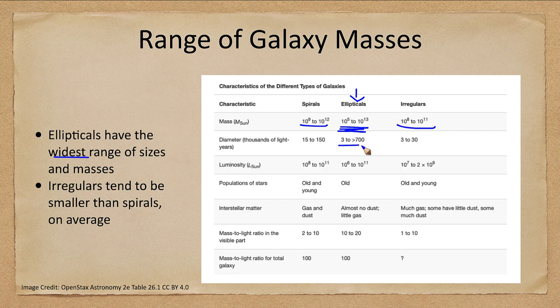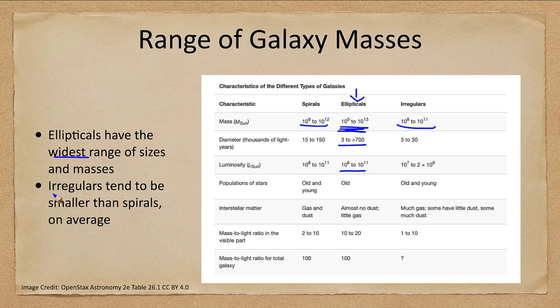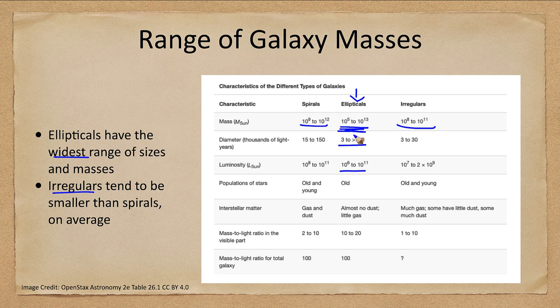Whereas the spirals and ellipticals and irregulars are a much narrower range. Diameters are the same: big range in diameters, big range in luminosity. We see that irregulars tend to be smaller than the spirals. So ellipticals and spirals are among the bigger two galaxies. Irregulars tend to be a little bit smaller in terms of the mass and the diameter.